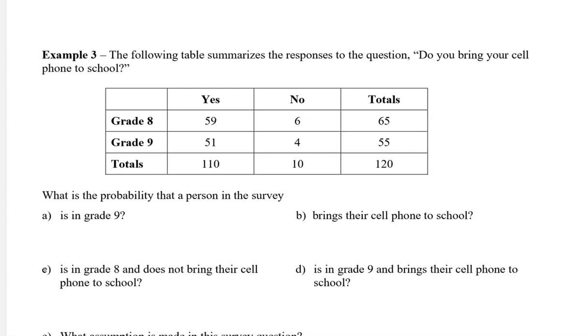So the first question is, what is the probability that a person in the survey is in grade 9? If you look across the table, there are 55 grade 9s out of a total of 120 people. We can reduce this, divide the top and bottom by 5, and we get 11 out of 24.